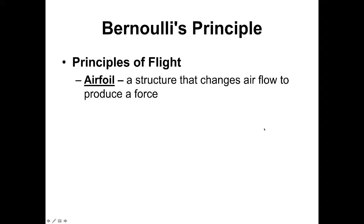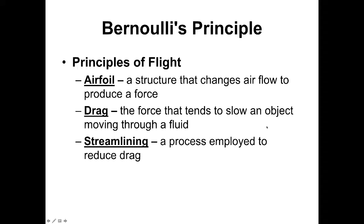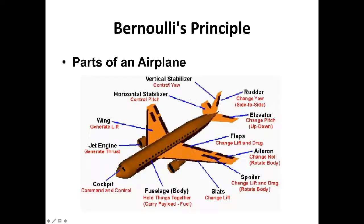An airfoil is a structure that changes airflow to produce a lift force. Drag is the force that slows down an object moving through a fluid or gas. Streamlining is employed to reduce drag. The various parts of an airplane are built for two purposes: to generate lift using airflow principles to allow changes in direction or altitude, and to streamline the aircraft so it moves through air with a minimum of drag.